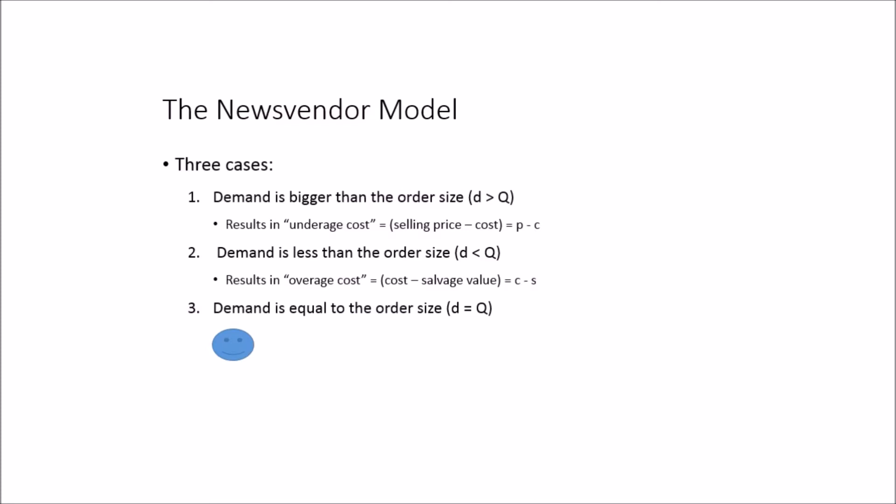There are three cases in the news vendor model. Case one: demand is bigger than the order size, resulting in an underage cost computed as selling price minus cost, or P minus C. Case two: demand is less than the order size, giving an overage cost computed as cost minus salvage value, or C minus S. Case three: demand equals the order size — the ideal case where we have no inventory costs or lost sales.